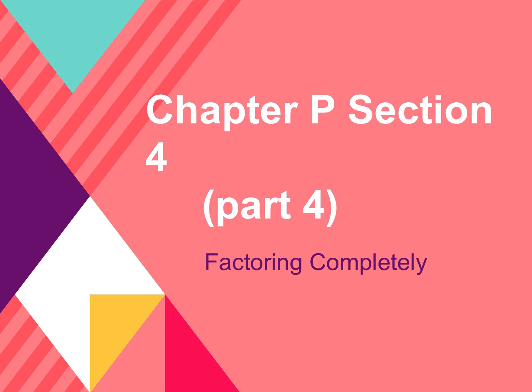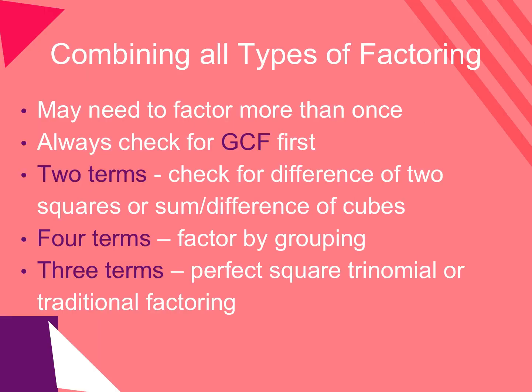Today we're going to finish up section four of the prerequisite chapter. The instructions are going to say 'factoring completely' or 'factor completely.' When you see those instructions, we're going to need to combine all the types of factoring. You may need to factor more than once — maybe twice, maybe three times, maybe four times. It's all going to depend on the given problem.